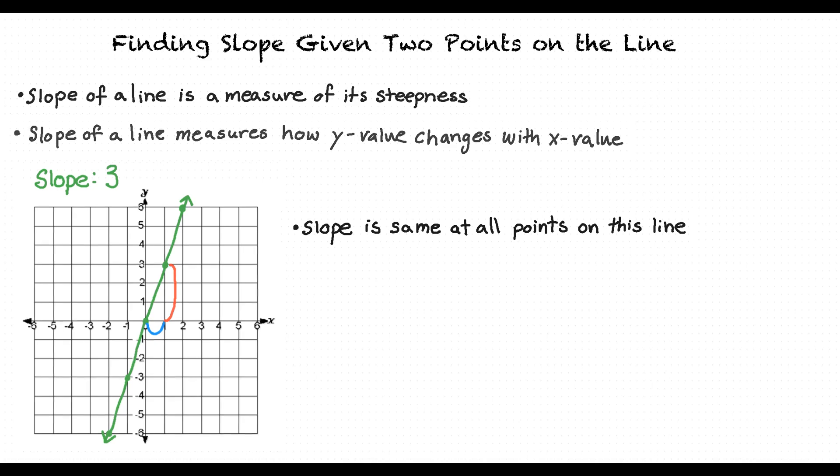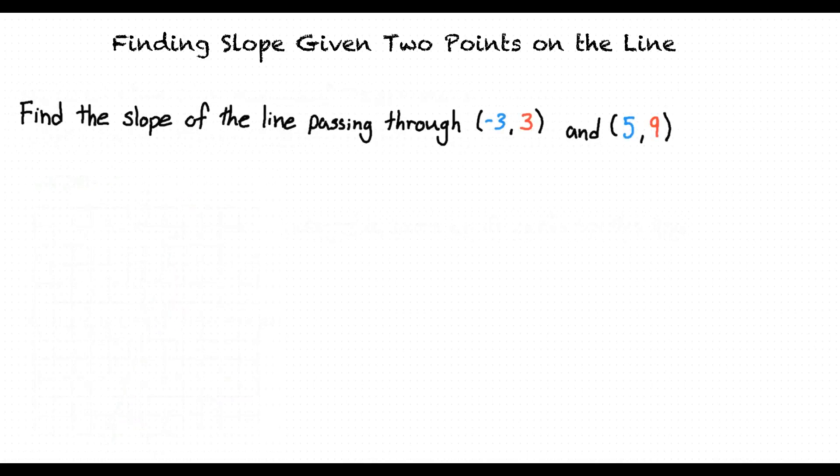Let's try out an example. Here, we have a problem asking us to find the slope of a line that passes through the points negative 3, 3, and 5, 9.